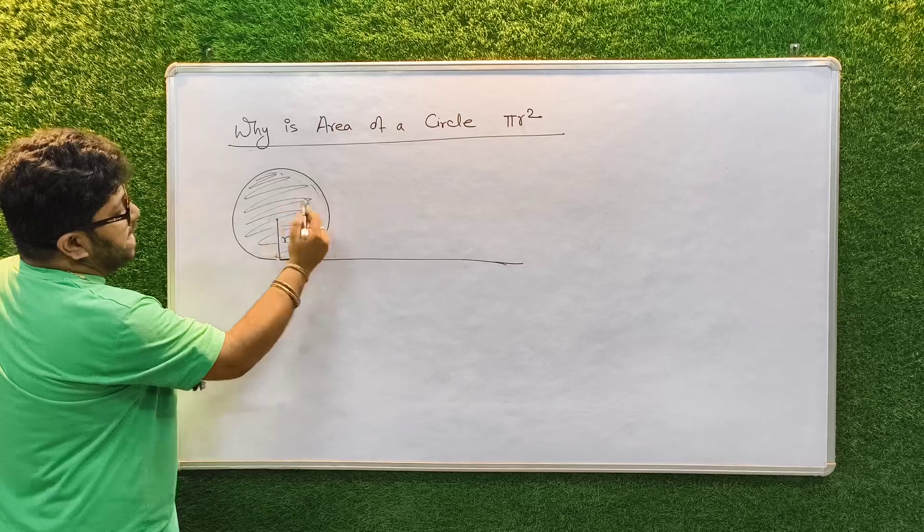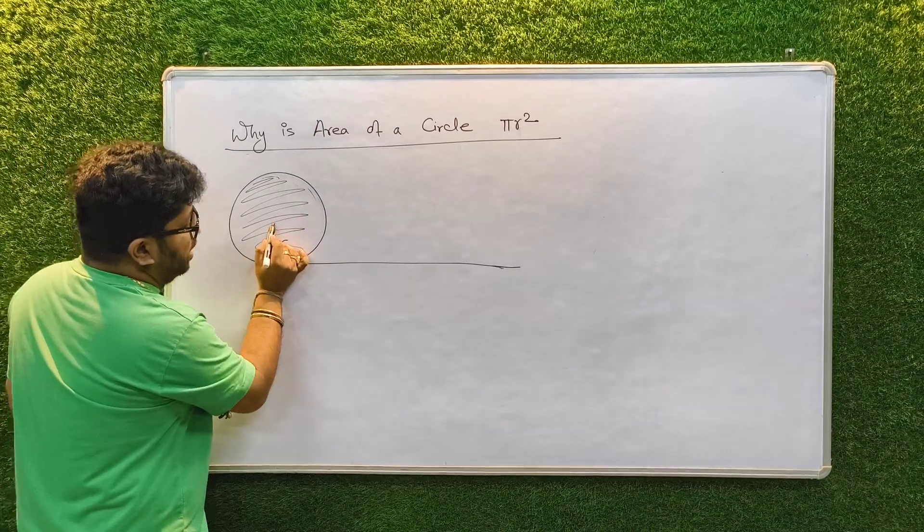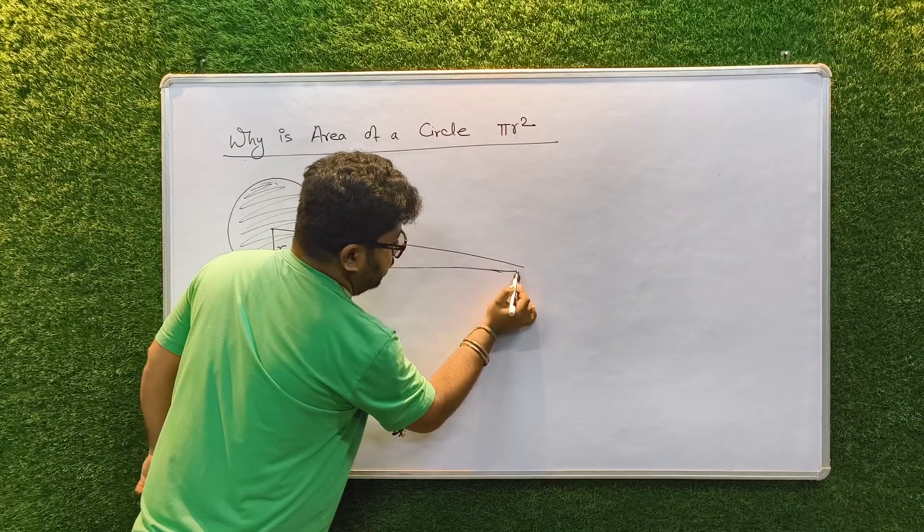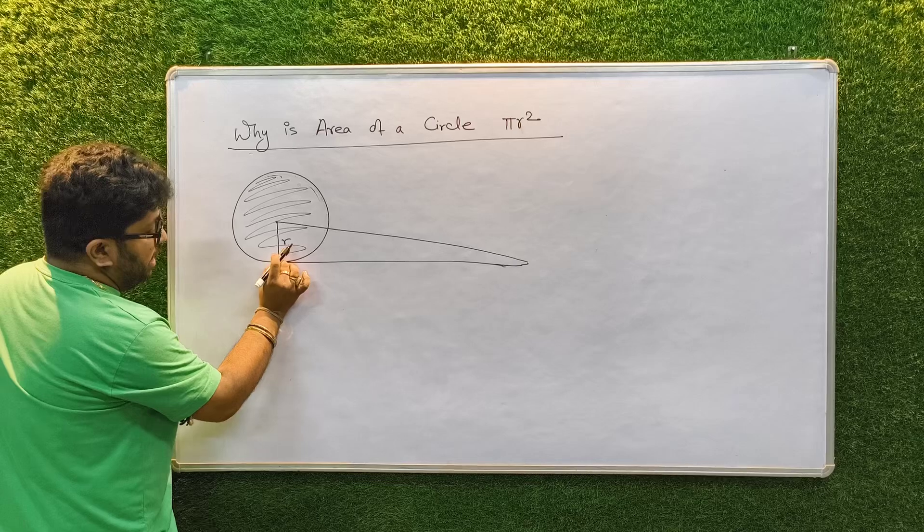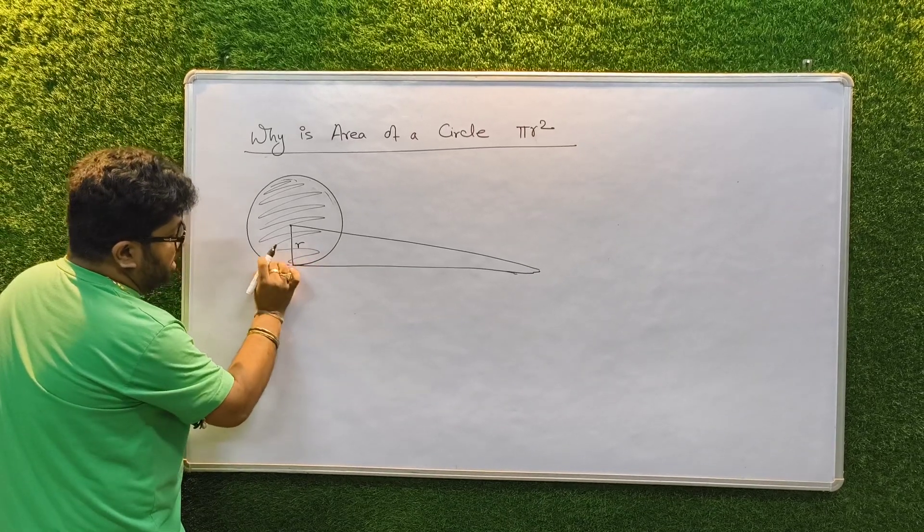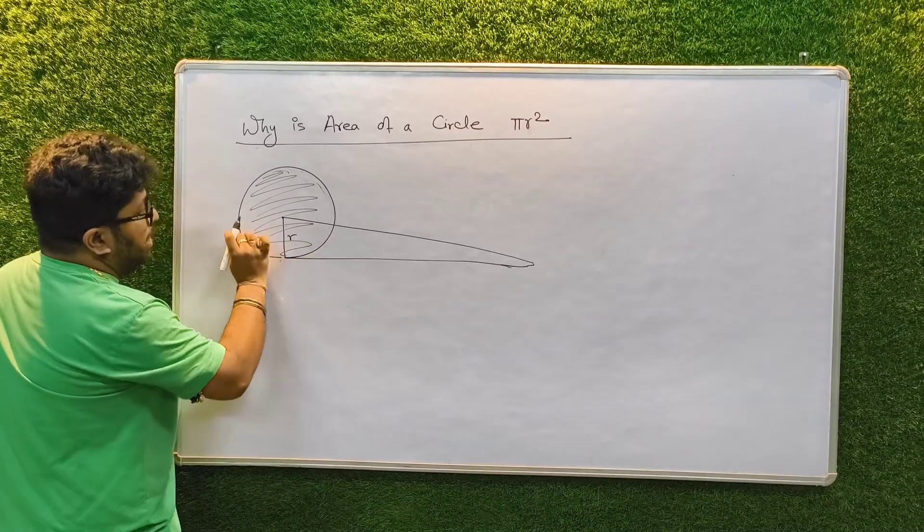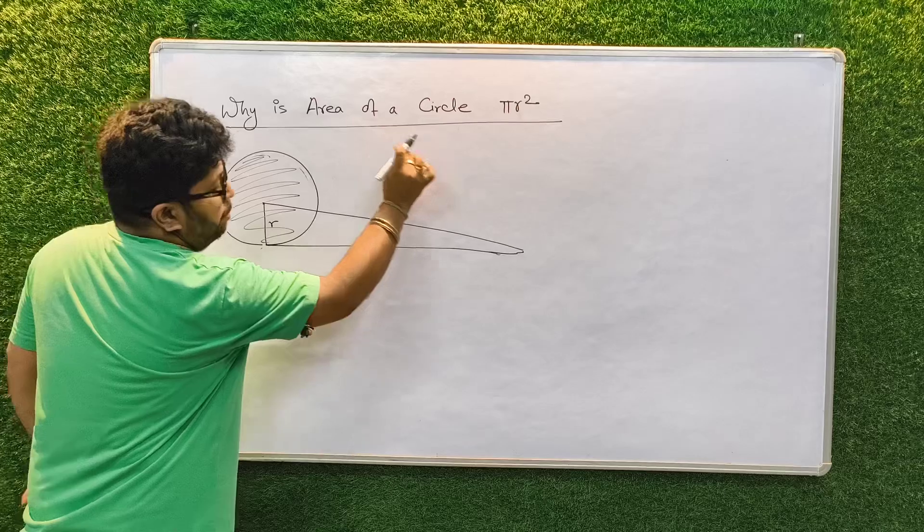Then where will this area go? This area will come in this triangle. If you can imagine properly, if I open the perimeter of the circle like a rope and open the rope and put it here.